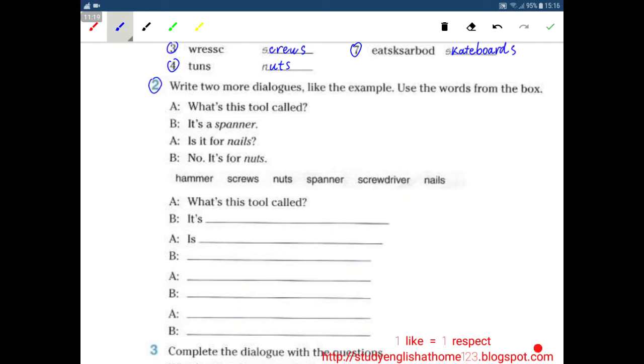Write 2 more dialogs like this sample. Use the words from the box. This is simple. What's this tool called? It's a spanner. Is it for nails? No, it's for nuts.